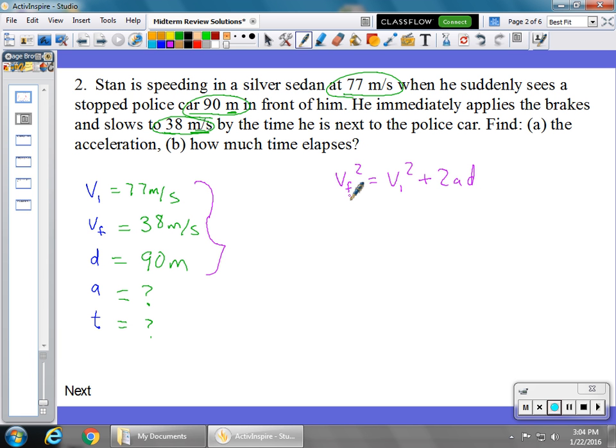Make sure that you're putting in your initial and final in the correct spot. Your final is 38 here on the left. That's 38 squared. Your initial is 77 squared plus 2 times A, which is what we're looking for. That's our unknown times 90, the distance.